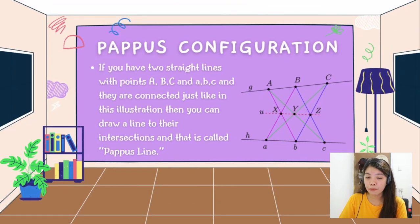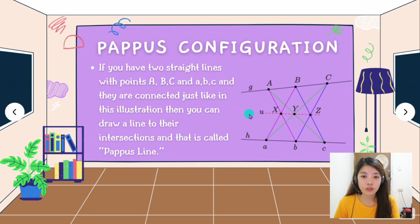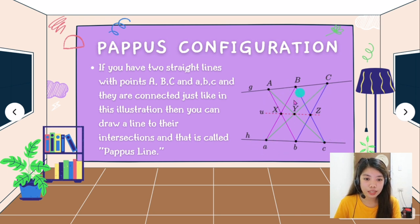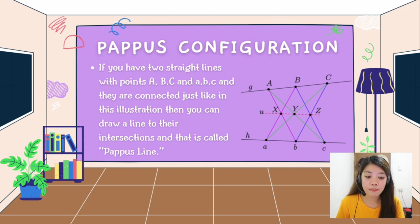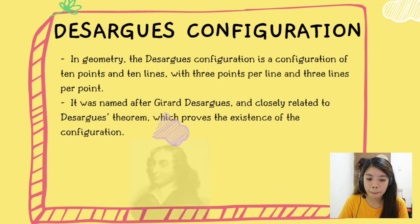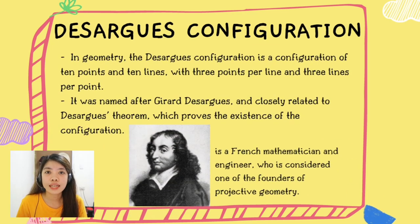To sum up the Pappus configuration: it only states that if you have two straight lines with points A, B, C and a, b, c, and they are connected as shown in the illustration, then you can draw a line through their intersections. That line is called the Pappus line. And that is what the Pappus configuration is all about. Now let us proceed to the last configuration of this video, which is the Desargues configuration.